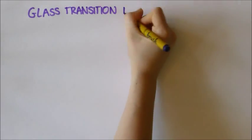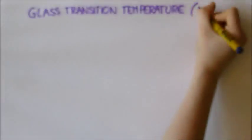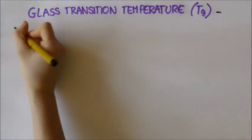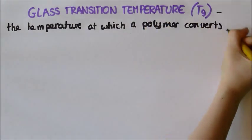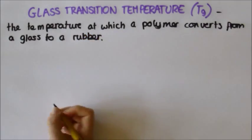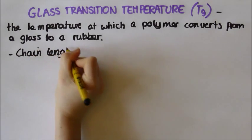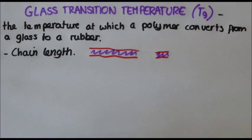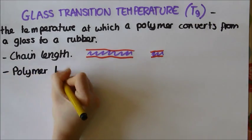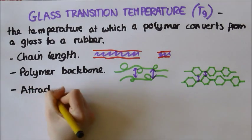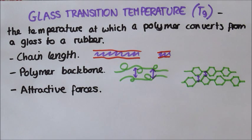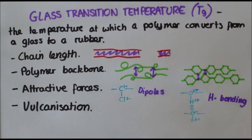The glass transition temperature is a measure of the strength and brittleness of a polymer. It is the temperature at which a polymer converts from a glass to a rubber. It is affected by several factors: chain length, the rigidity of the polymer backbone, the attractive forces between the groups in the polymer which can cause dipoles or hydrogen bonds, and whether or not the polymer has been vulcanized.